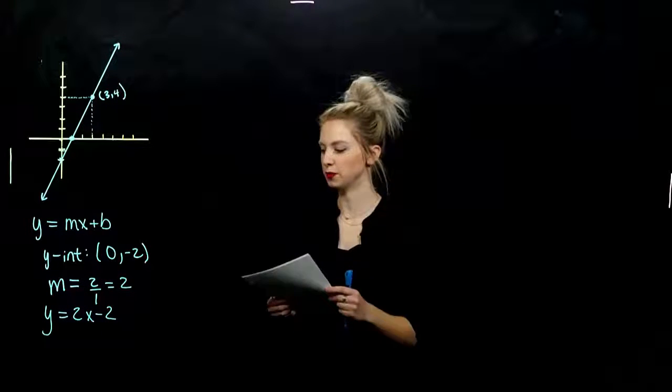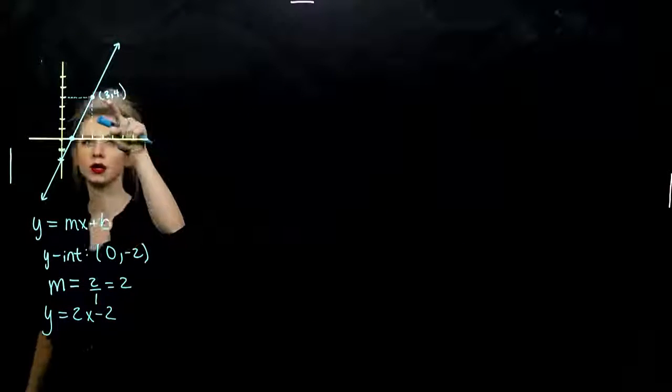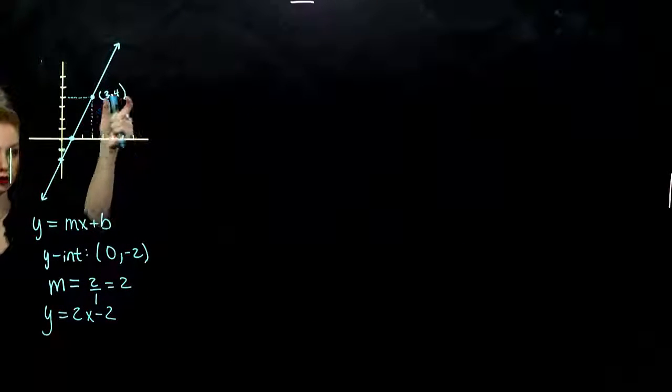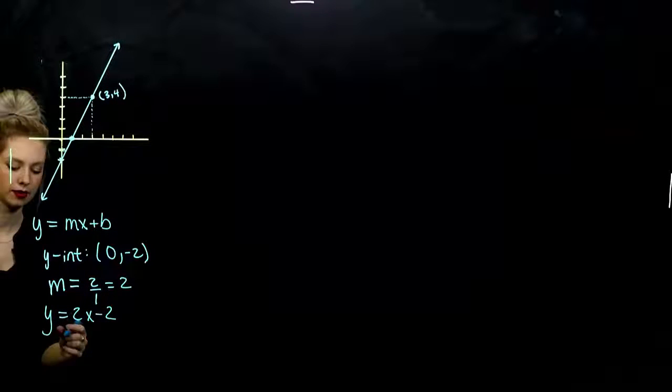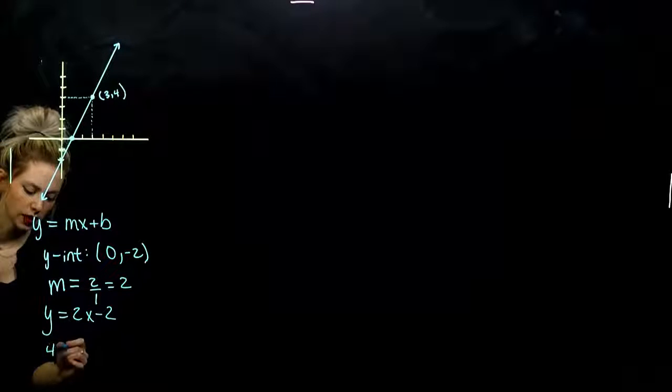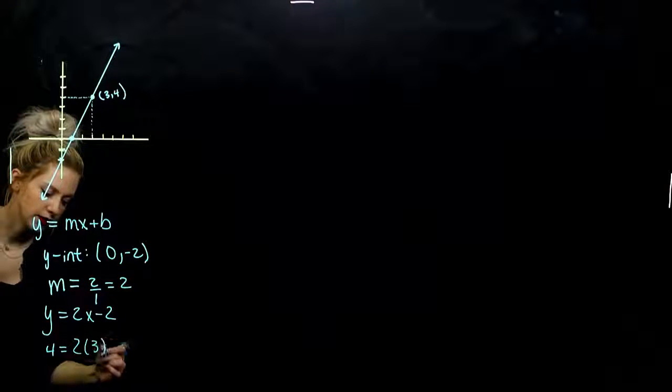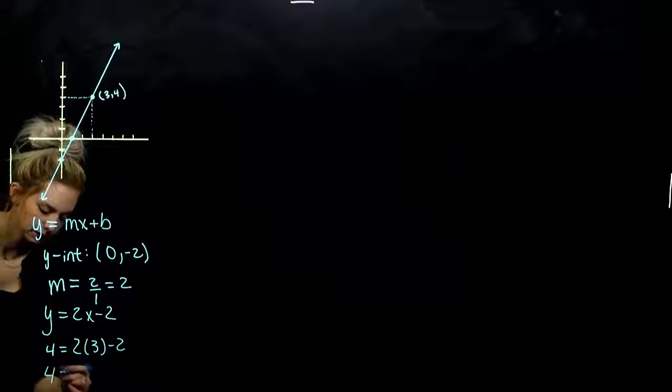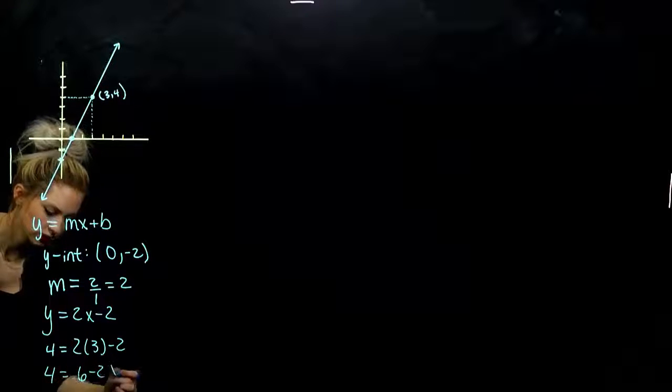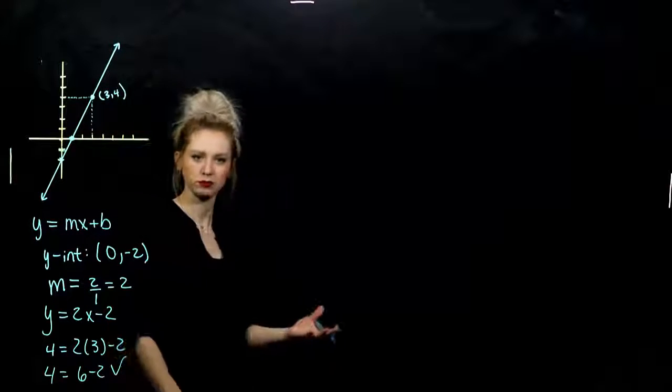So let's evaluate, double check, at 3, do I get out 4? So we'll plug in and verify that this point is actually on our line. So 4 was my y value. Is it true that when I plug in 3 for x, I get out 4 for y? So what are we looking at? 6 minus 2 is definitely equal to 4. Makes it true.